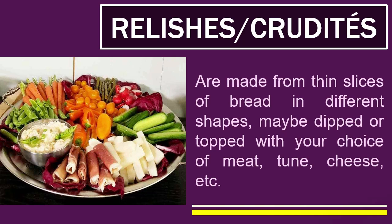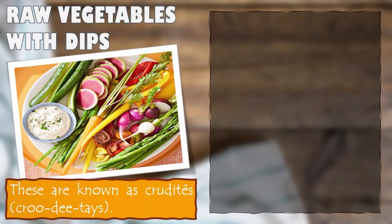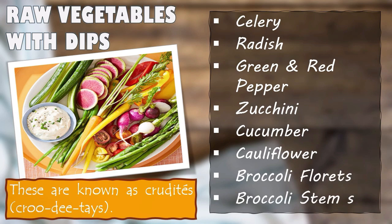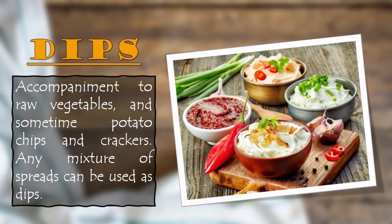Relishes or crudités are pickled items or raw, crisp vegetables such as julienne carrots or celery sticks. Relishes are generally placed before the guests in a slightly deep, boat-shaped dish. They include two categories. The first is raw vegetables with dips, known as crudités — 'crud' in French means raw. Common bite-size crudités served with dips include celery, radish, green and red pepper, zucchini, cucumber, cauliflower, and broccoli florets and stems. The second category is dips, which accompany raw vegetables and sometimes potato chips and crackers. Any mixture of spreads can be used as dips, and proper consistency is important.